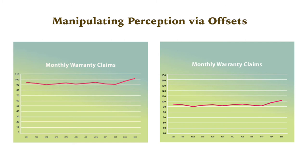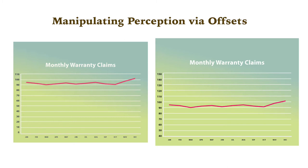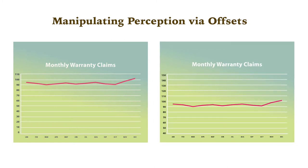Now let's look at another common issue with charts and graphs. These two graphs show the same data, but the graph on the right makes the situation appear better at first glance because the values appear lower and closer to the ideal of zero. However, that perception is purely the result of manipulating the vertical axis. The axis on the left starts at zero, but the axis on the right starts at 40 — making the data points appear closer to zero when in fact they are not.